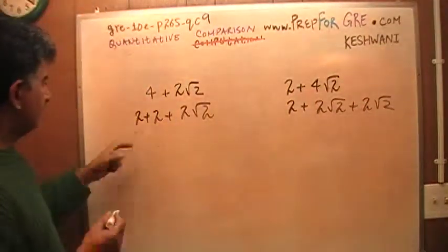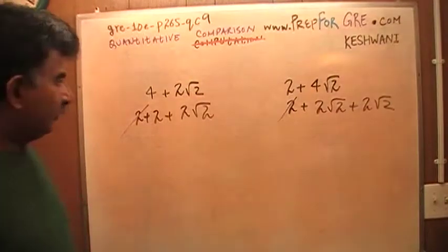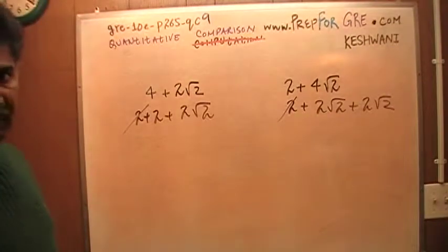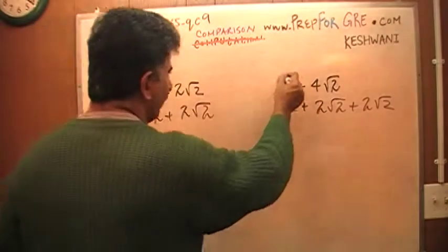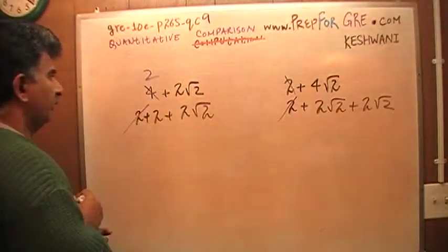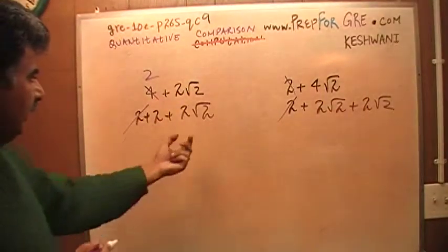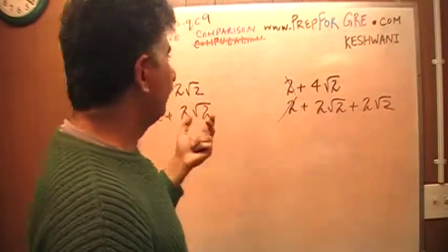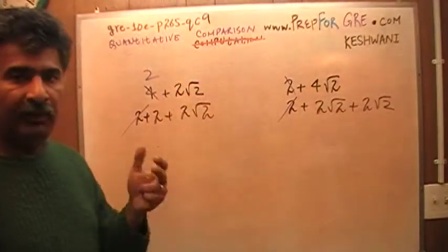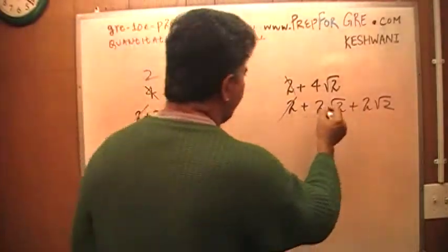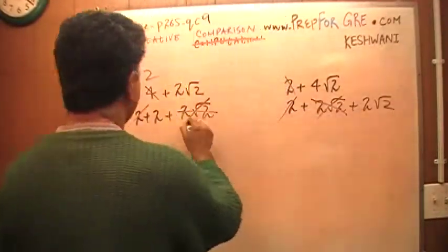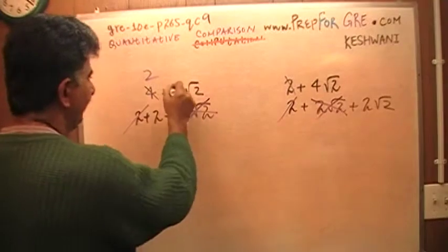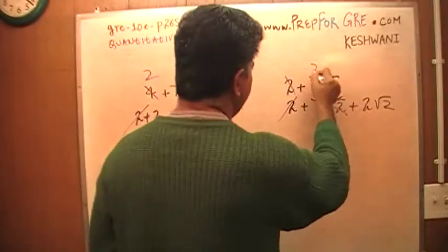Well, I see a 2 here and a 2 here. That 2 plays no role. Of course, in the exam what I would have done is this: you get rid of this 2 and change this 4 into a 2. And then I see 2 root 2 here and I see a 4 root 2 here. 4 root 2 is same as 2 times root 2 plus 2 times root 2. So that takes care of this part. Or in the exam I would have done this: cross this out and change this into 2.